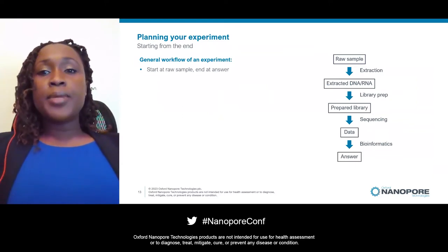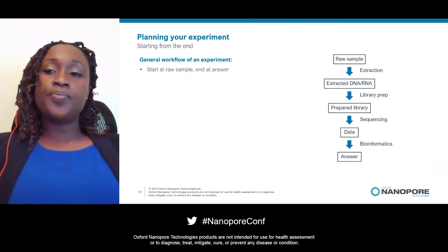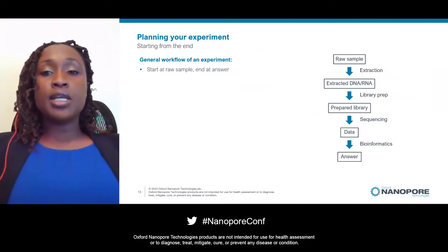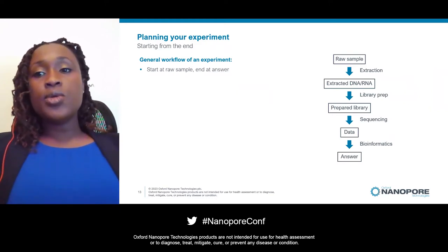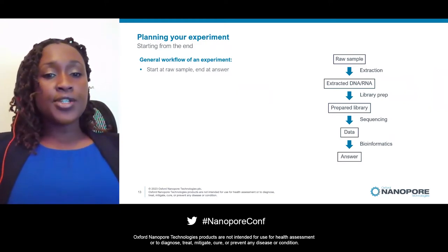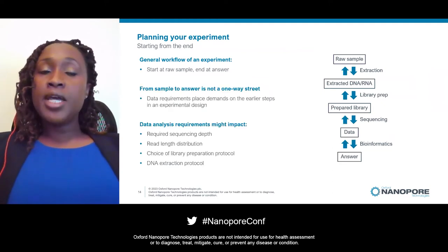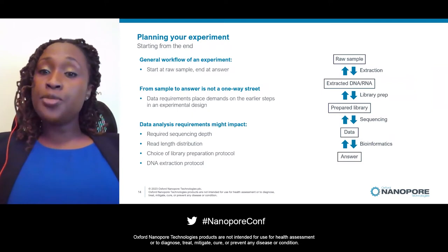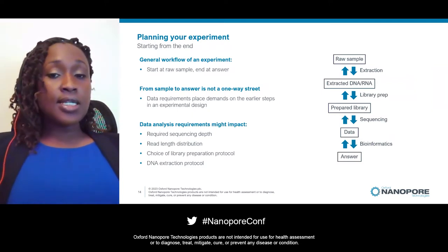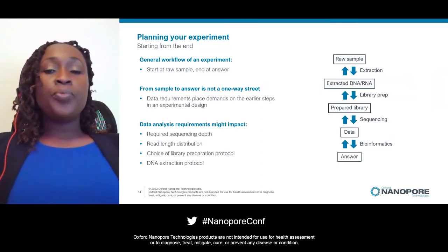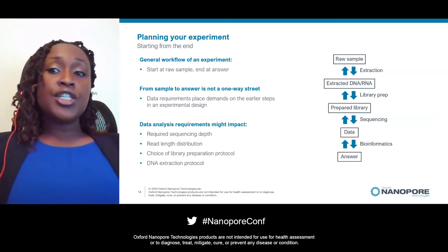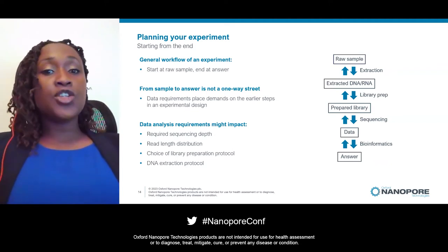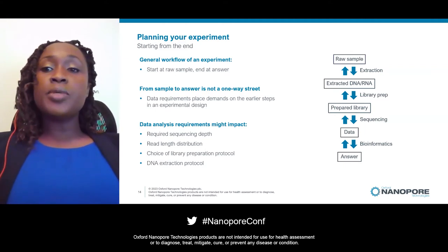When planning any experiment, we often start with our sample and how it should be extracted. Then we envision a stepwise path where the extracted DNA is turned into a sequencing library during the library preparation phase, which is then sequenced, the data is analyzed, and the scientific question is answered. In reality, things are a bit more complex — it's like a two-way conversation. We recommend starting from the end point and working your way back. In most instances, the bioinformatics requirement of the experiment will dictate the data required, which in turn dictates how you prepare the library, which then dictates the type of extraction you do. With that in mind, let's take a look at some additional considerations.